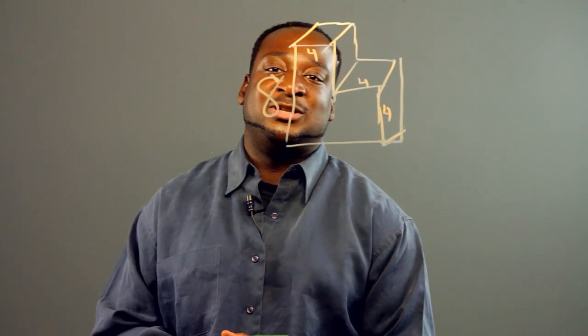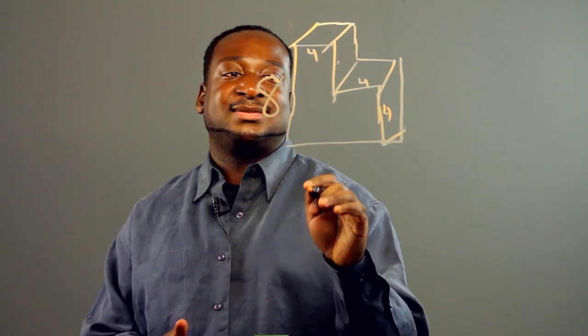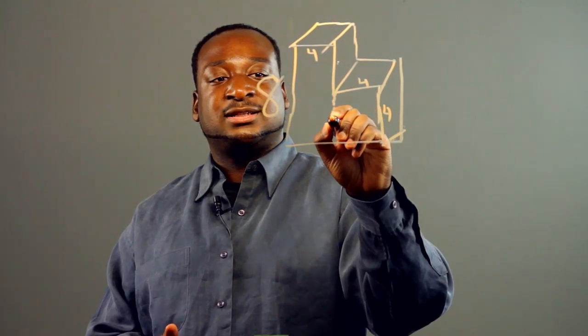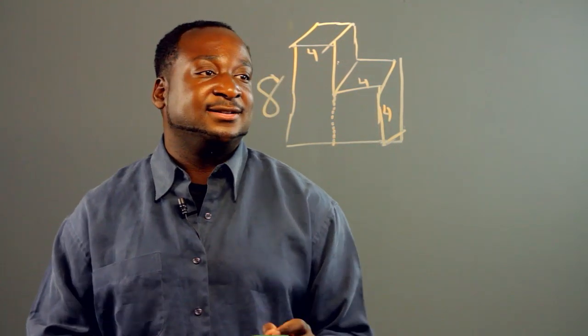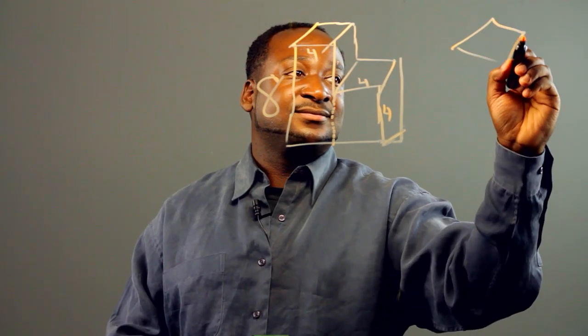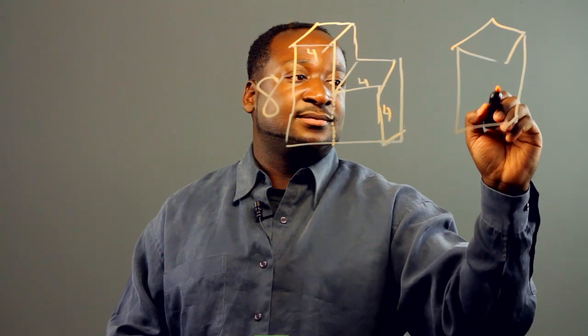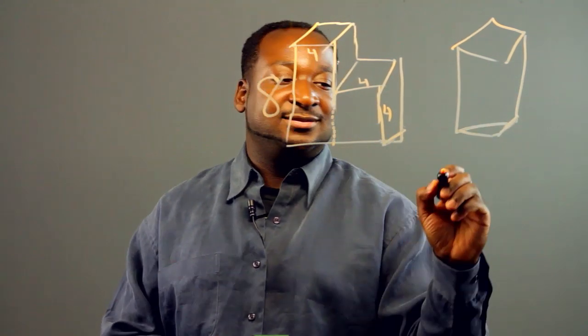Now first what I would do is break this up into two pieces, slice it right down here. So I would get this box and this one.